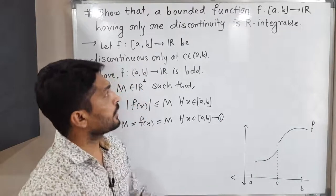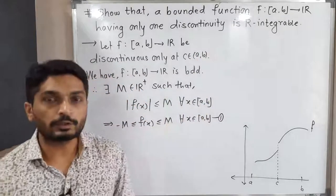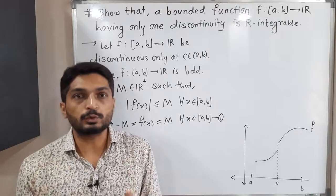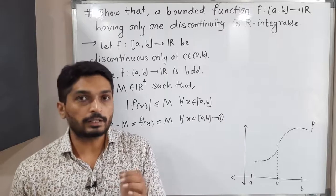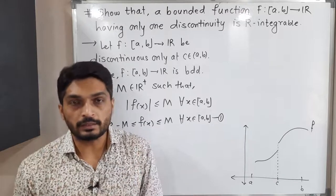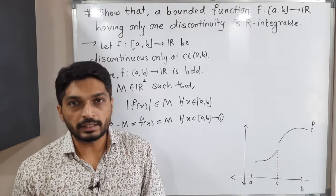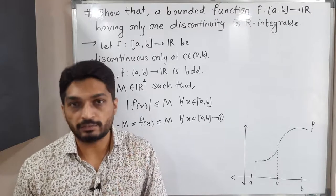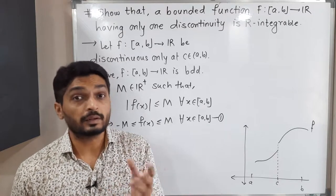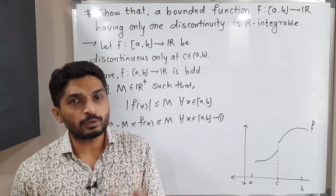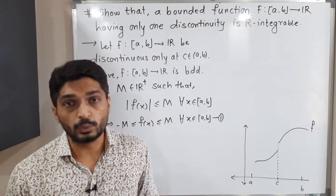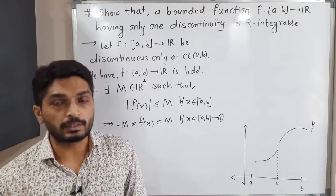We have to prove the function is Riemann integrable. There are two different methods: either we can prove the upper integral equals the lower integral, or we can use the epsilon definition, also called the Riemann criterion. Here we are going to follow the second method — proving Riemann integrability using epsilon.